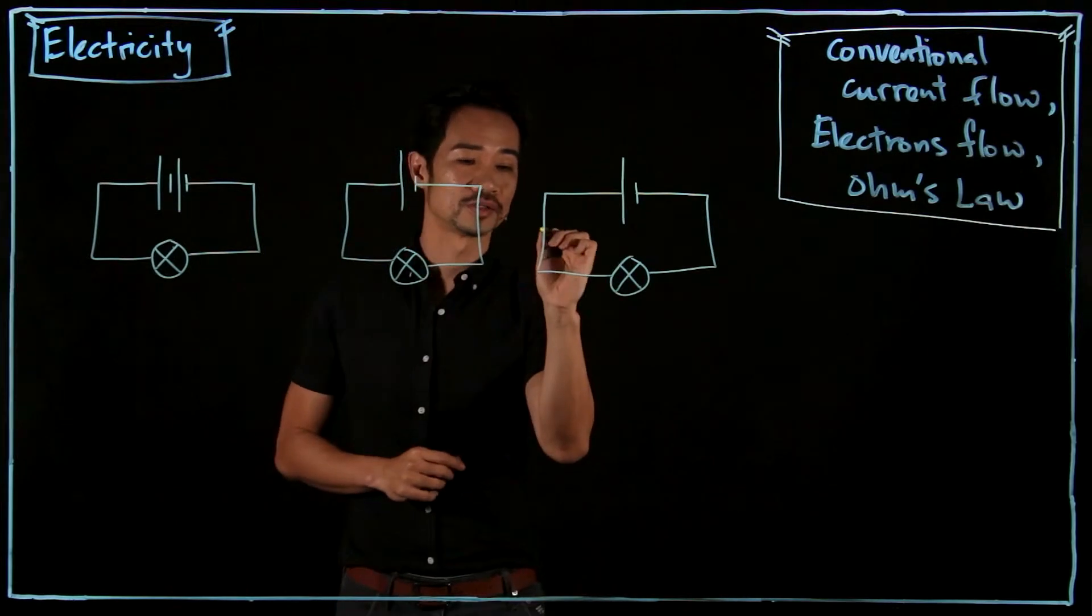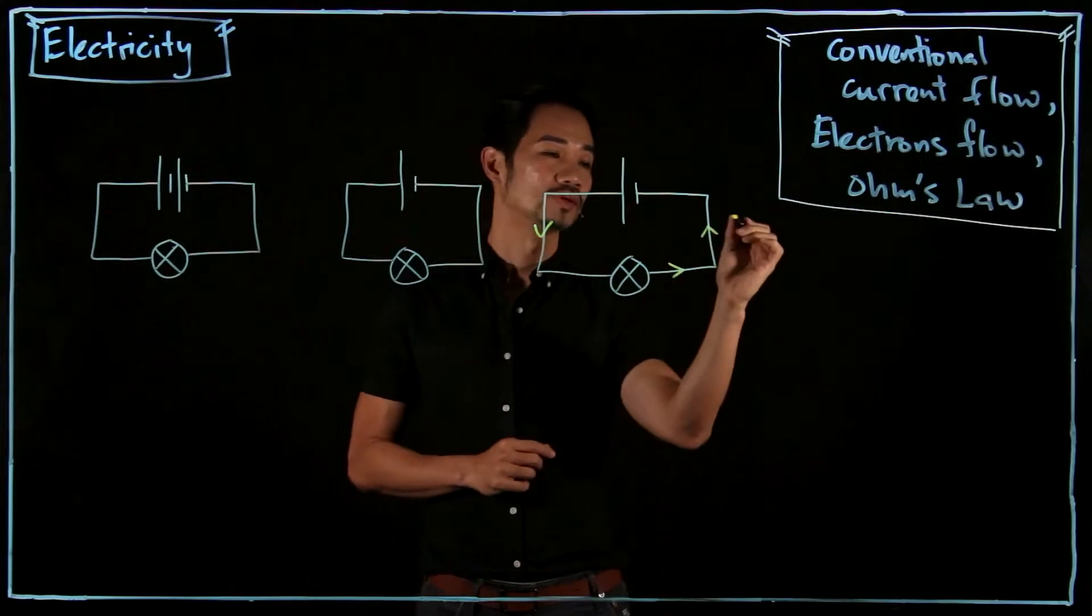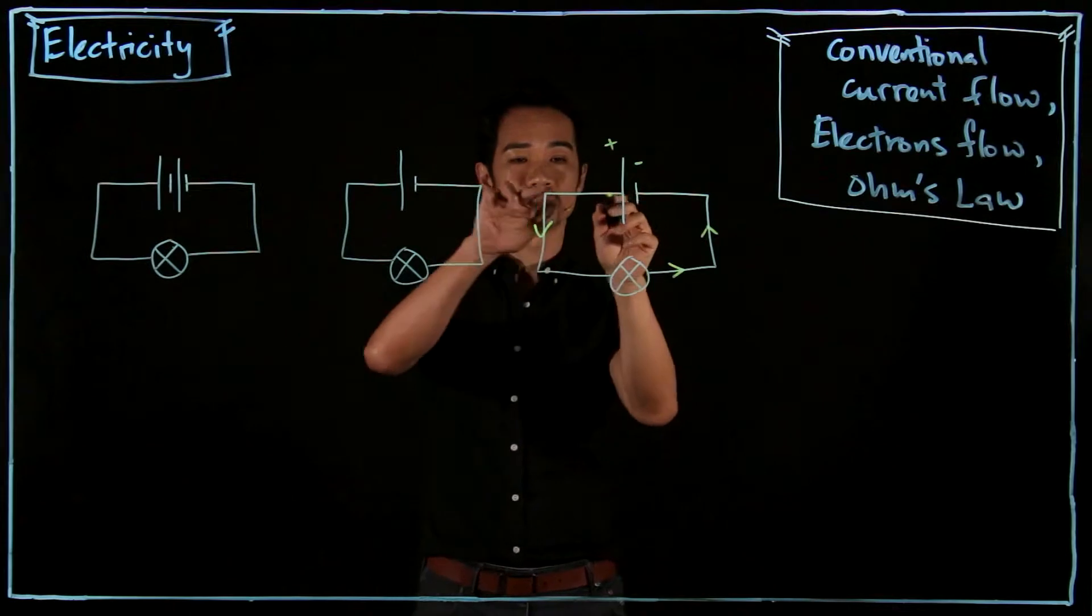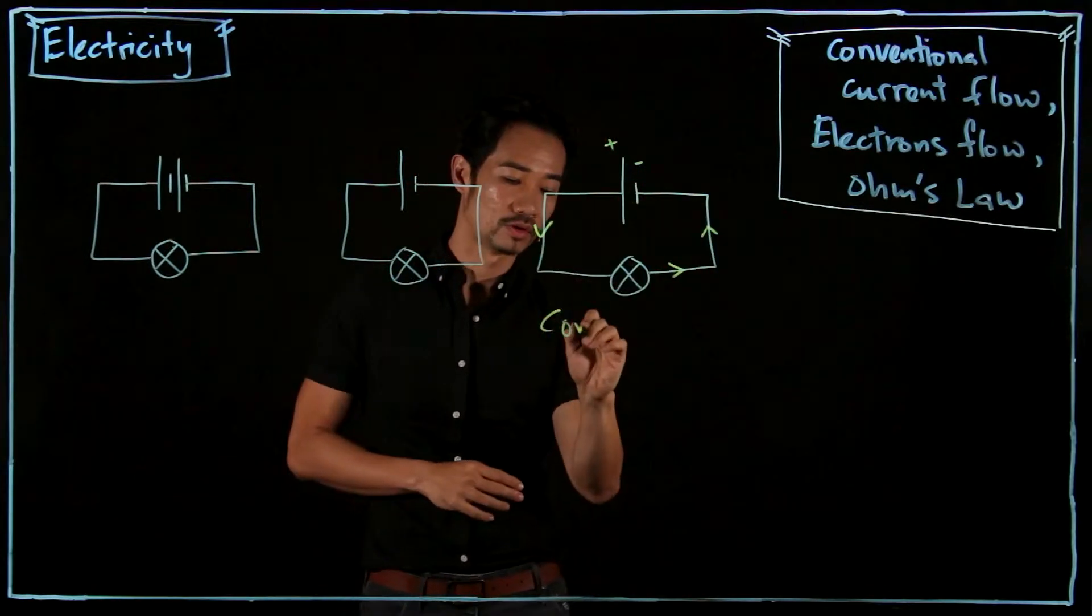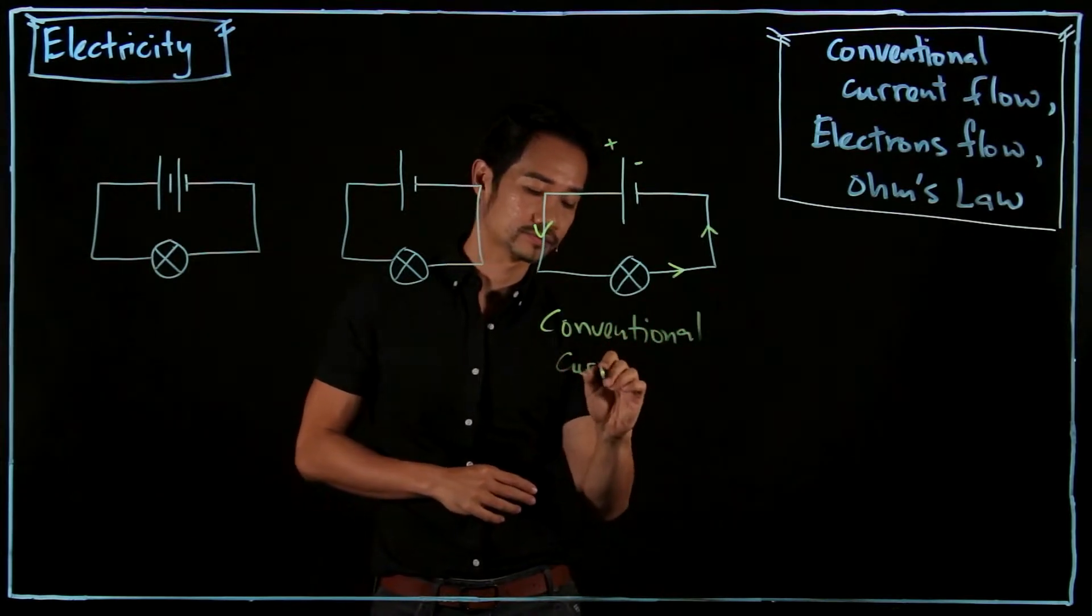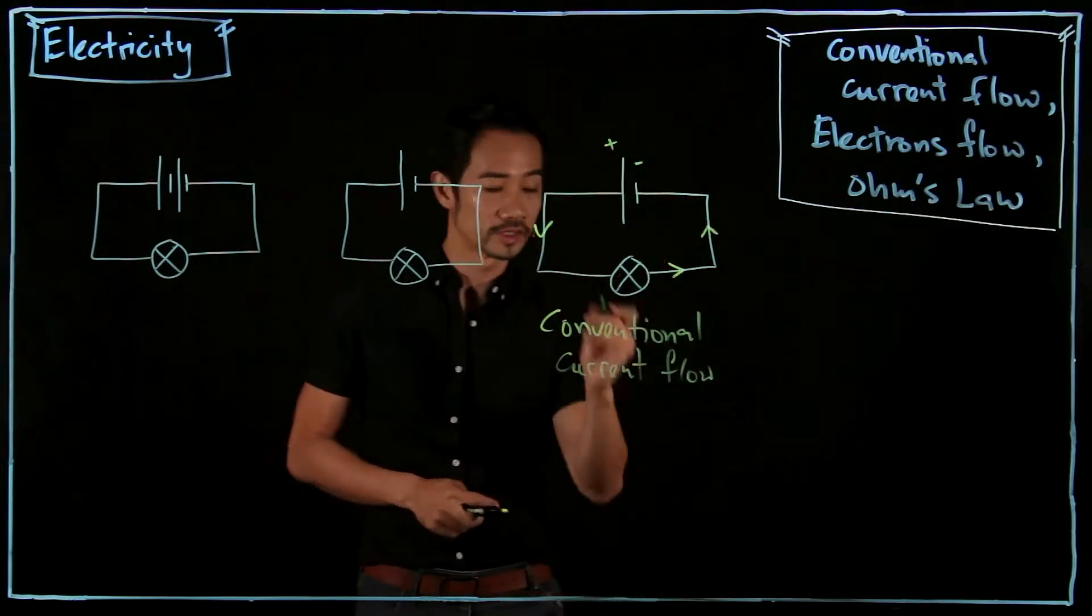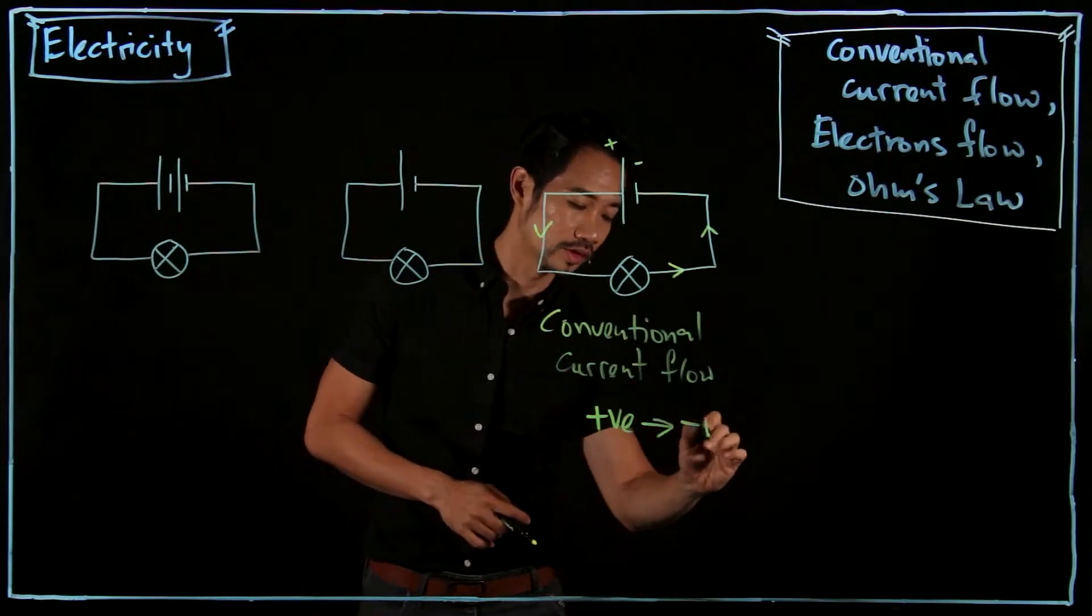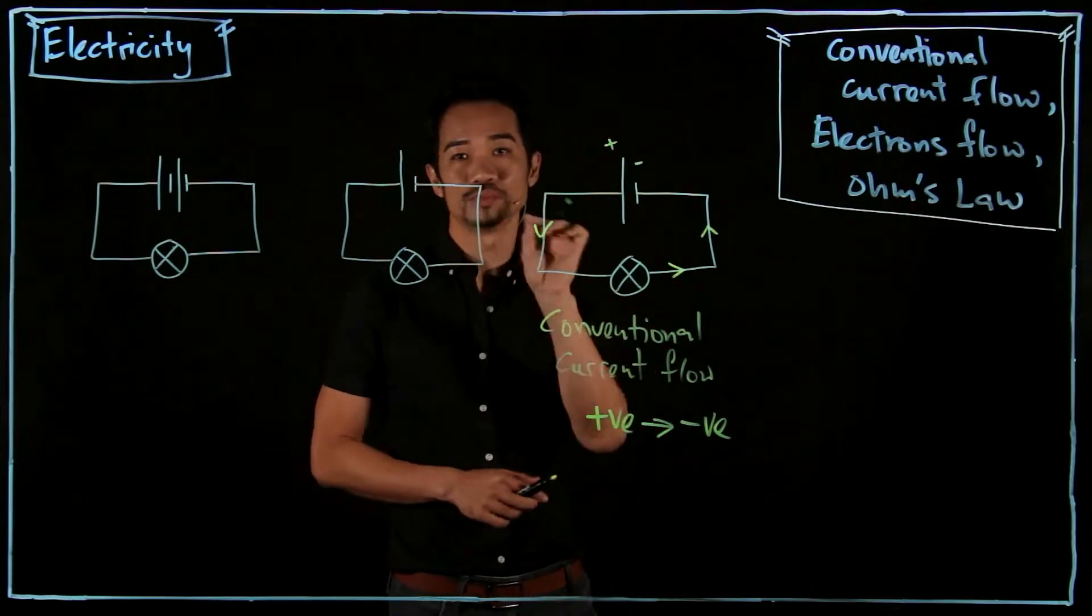So you notice that in my drawings, I drew the direction of the current flow. So this is alongside plus and minus. When the current flow from plus to minus, we call this flow conventional current flow. So what is conventional current flow? It's when the current is flowing from positive to negative. So this is originally the assumed direction.